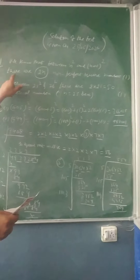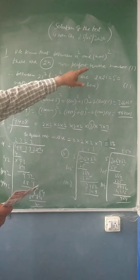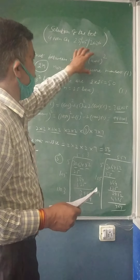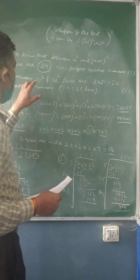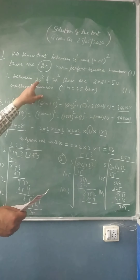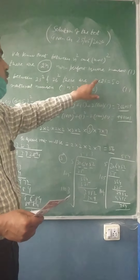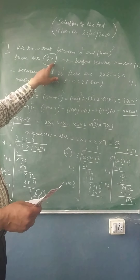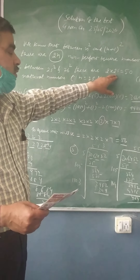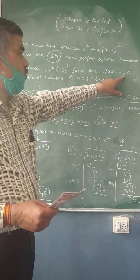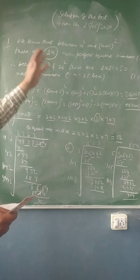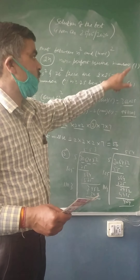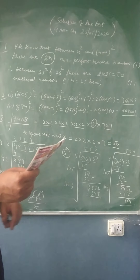There are 2n non-perfect squares between the squares of two consecutive numbers. One mark is for writing this property in support of your answer, and your n is equal to 25. Therefore, the number of naturals between 25² and 26² is 2 × 25, which equals 50. So 50 natural numbers lie between the squares of 25 and 26. One mark for writing the property, one mark for this calculation. The question was of two marks.